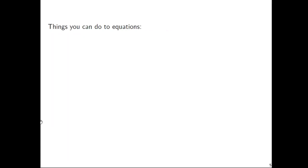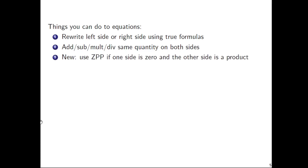Okay, let's just take a step back for a second and talk about and review the things that you can do to equations, because we're, I guess in a sense, adding to the list a little bit. So you can rewrite the left side or the right side of an equation using true formulas. You can add, subtract, multiply, or divide the same quantity on both sides. And that has traditionally been the two main things that we've looked at. But what's a little newer for us is you can now use a zero product property if one side is zero and the other side is a product.